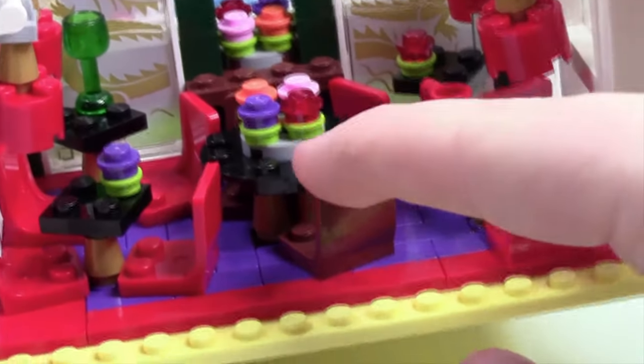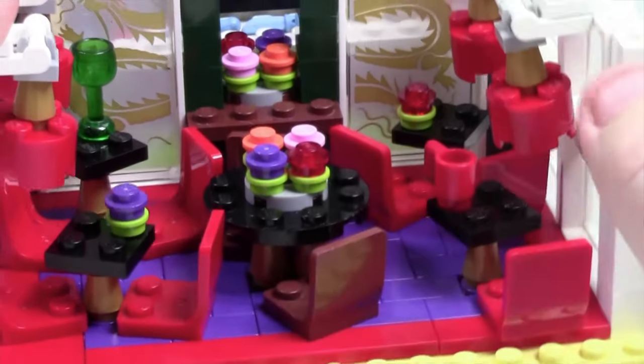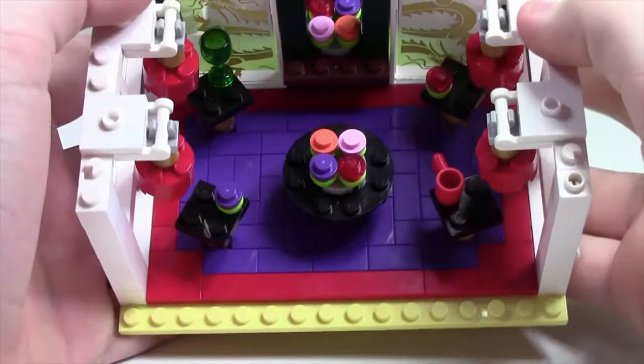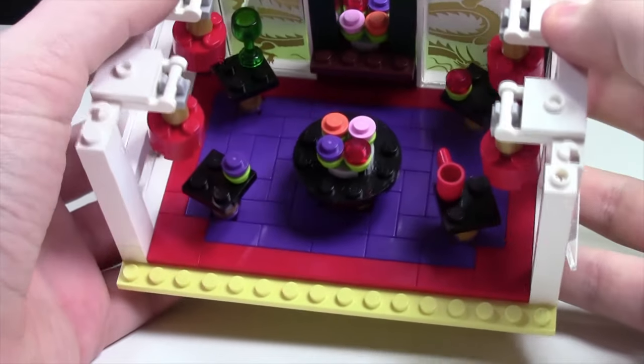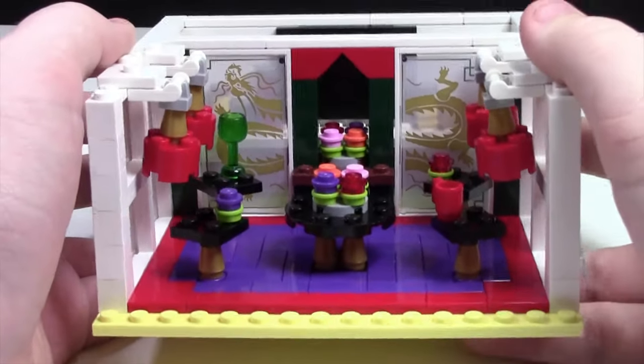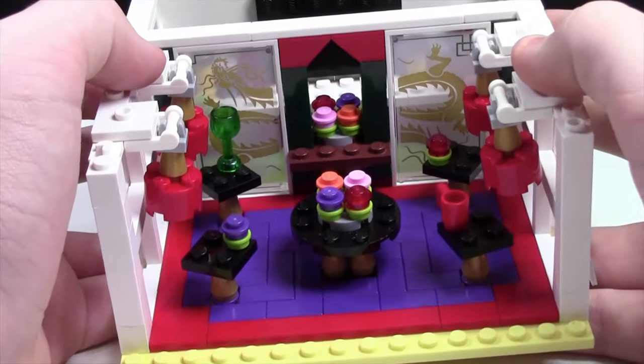The problem with this restaurant is none of the chairs are fastened down. So if I turn it like this, they all fall out. Here's what the restaurant looks like without all the cluttered up chairs. There's a lot of red and purple tiles on the floor because it is a sushi restaurant, and I like those colors for the sushi restaurant.